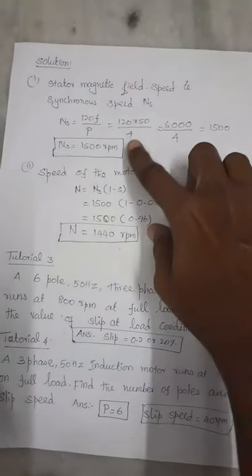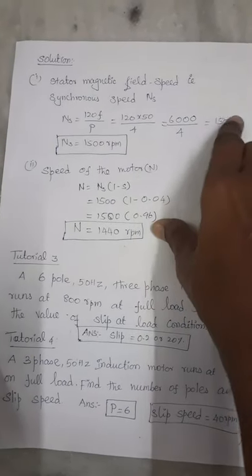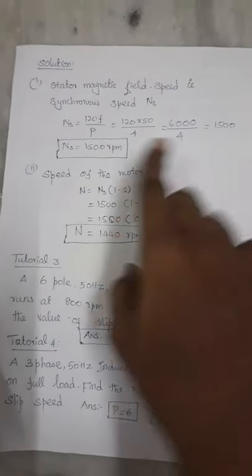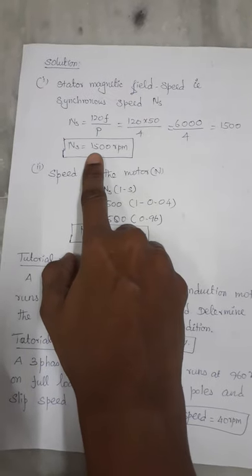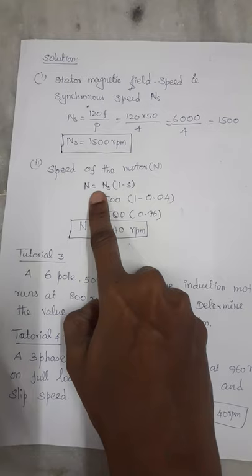So the stator magnetic field means synchronous speed 120f by P. Substituting the values, Ns equal to 1500 RPM.